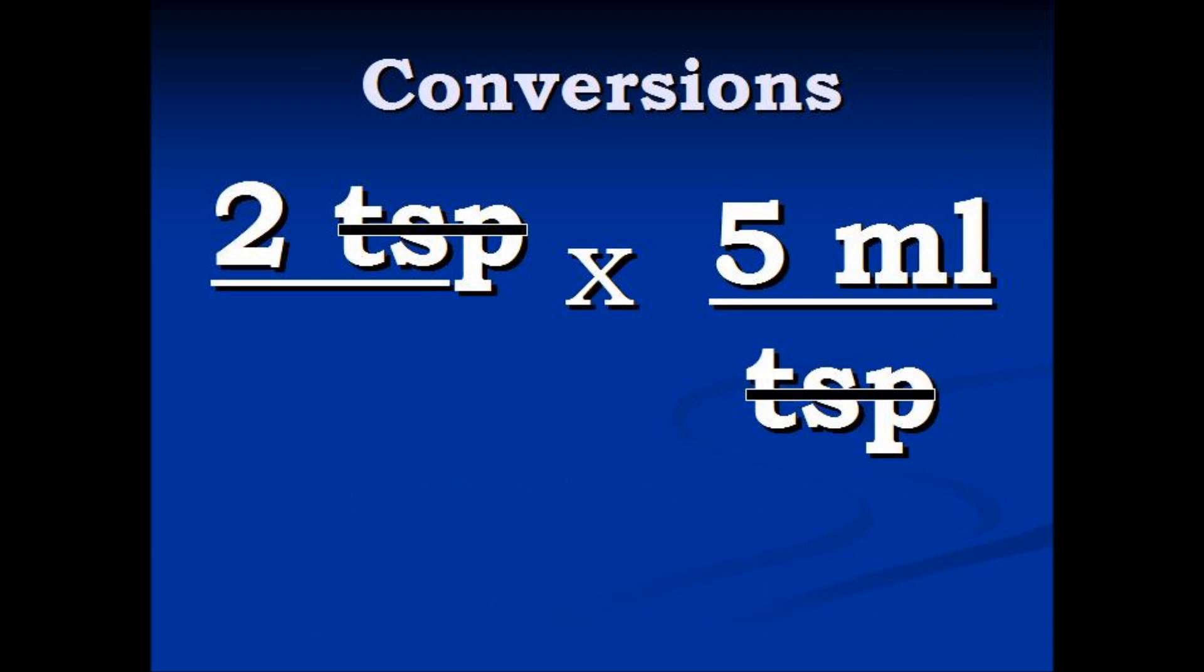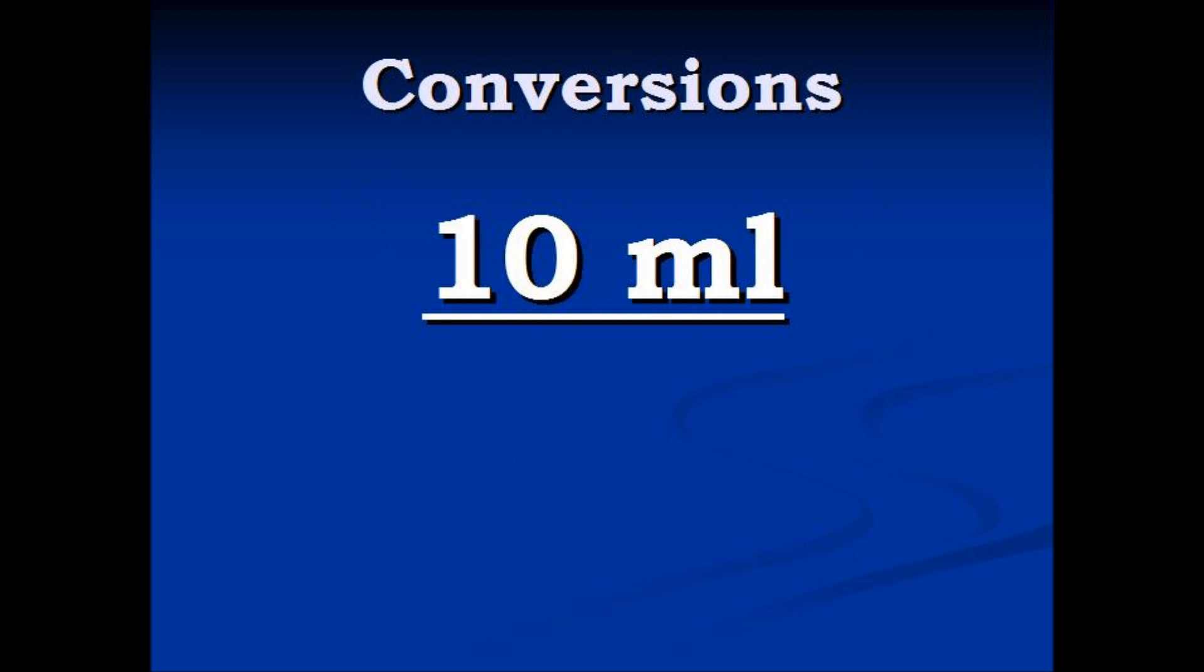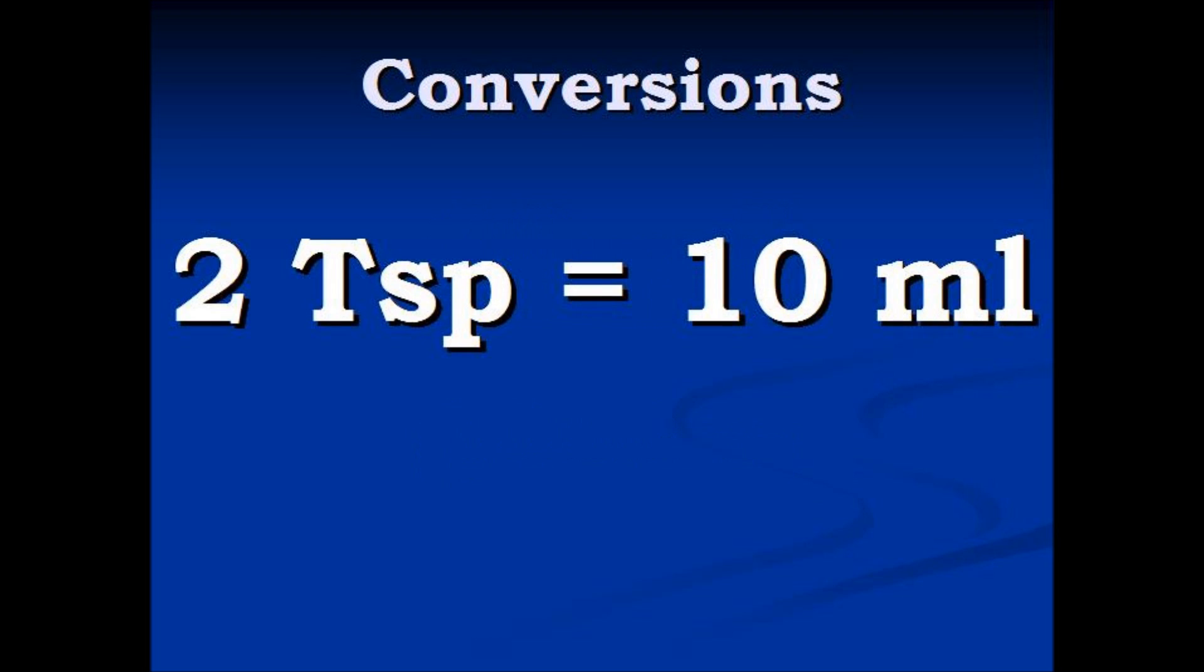Now that we've got the teaspoons out of the way, we multiply. Two times five milliliters equals ten milliliters. That's our solution. So two teaspoons equals ten milliliters.